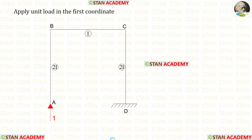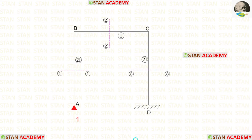Now let us find M1 by applying a unit load in the first coordinate. To find M1 we make sections — there are three parts: AB, BC, and CD — so we make three sections. The first section is in AB, the second in BC, and the third in CD.